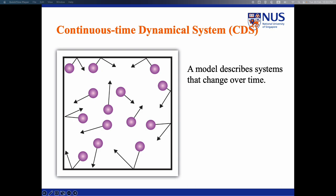The continuous time diffusion process can be modeled by a continuous time dynamic system. We describe the systems that change over time. For example, in the particle system, CDS captures the position of each particle along the time.